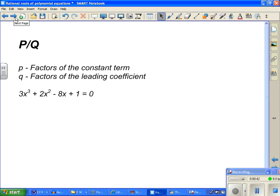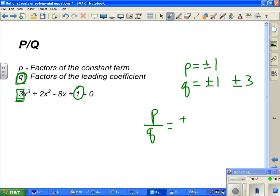P over Q. P are the factors of the constant term. So in this case, 1. What are the factors of 1? Plus or minus 1, because negative 1 times negative 1 could be 1. Q are the factors of the leading coefficient. So in our case, 3. What are the factors of 3? Plus or minus 1, plus or minus 3. So we need the factors of P divided by Q. Well that would be plus or minus 1 over 1 and plus or minus 1 over 3. So we have four factors: positive 1, negative 1, positive 1 third, and negative 1 third.